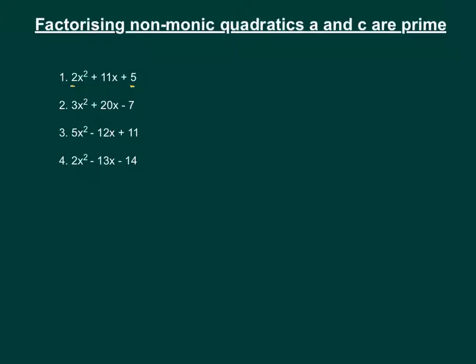So that means that we know that for this first one, inside the bracket is going to be a 2x and a 1x, because that's the only combination that will make 2.